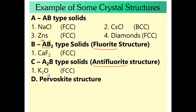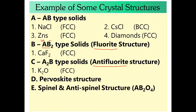Then we have the perovskite structure — an individual structure with three atoms. Spinel and anti-spinal structure. The perovskite structure has 1A, 2B, and 4O. The AB2O4 structure is the same as spinal structure. Spinal and anti-spinal are closely related and we will study the small parts in detail.